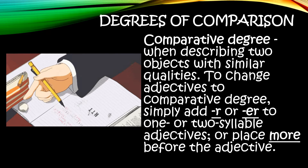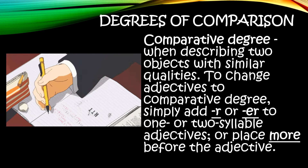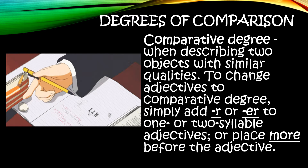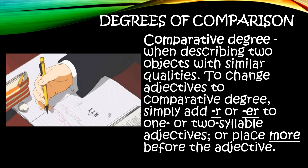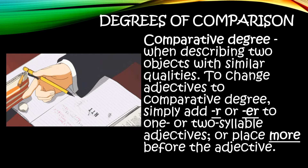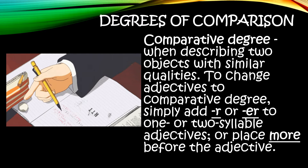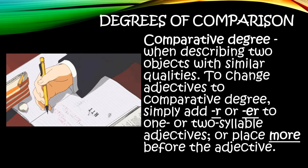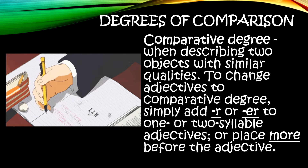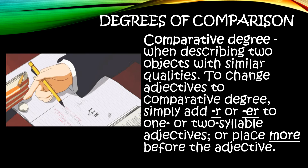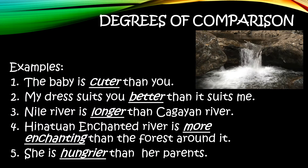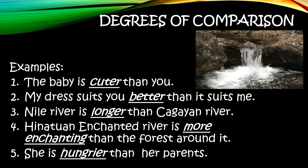The second degree of comparison is comparative degree. This is when describing two objects with similar qualities. To change adjectives to comparative degree, we simply add -r or -er to one or two syllable adjectives, or place 'more' before the adjective.